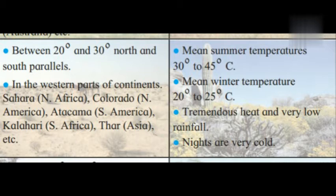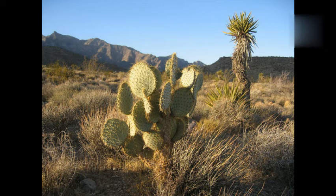Their climate has summer temperature of 30 degree to 45 degree Celsius, winter temperature of 20 degree to 25 degree Celsius, with tremendous heat, very low rainfall, and very cold nights. In natural vegetation, there are thorny bushes with hardly any leaves — leaves are narrow and oily with thick bark.